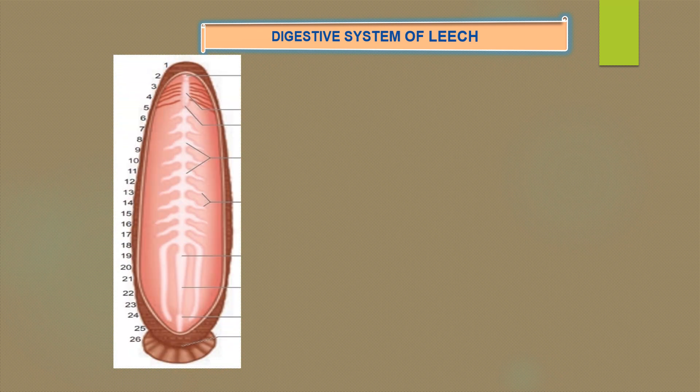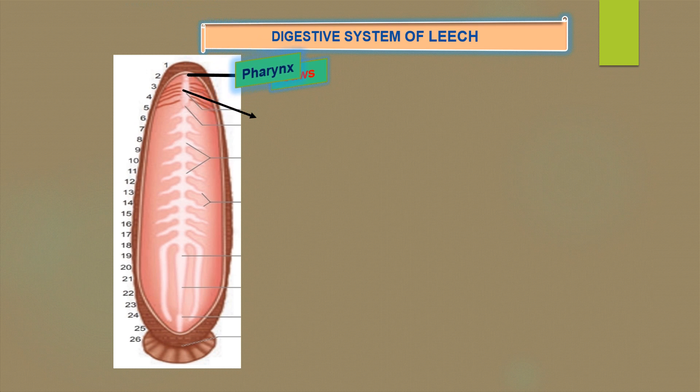First system: digestive system. In the digestive system, there is the alimentary canal and digestive glands. The alimentary canal of leech is a straight tube-like structure from the mouth to anus. Mouth is a tri-radiate aperture situated in the middle of the anterior sucker, that leads into a small buccal cavity. The floor of the buccal cavity bears three jaws with a single row of minute teeth. Mouth and buccal cavity occupy the first five segments.